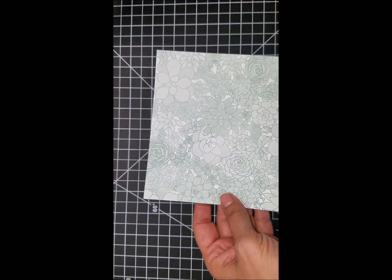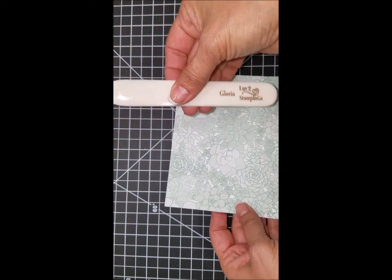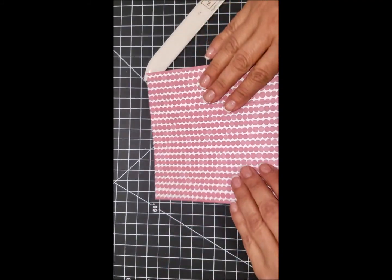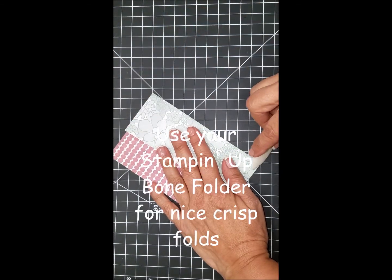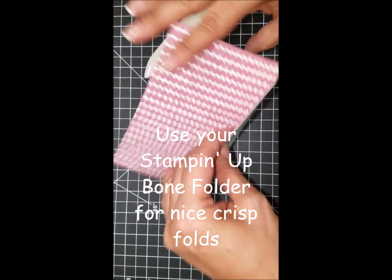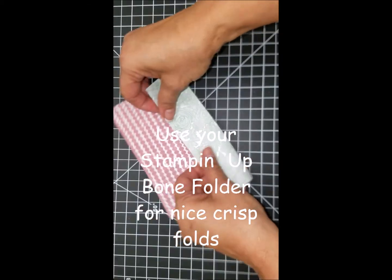This paper is pretty busy so I found it easier to do a nice score line with my bone folder in order to get a really nice crease so I can see where I'm going to be cutting with my paper snips in a few minutes.